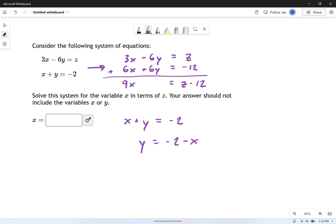And now I'm going to stick that back into the first equation. The first equation was 3x minus 6y, but instead of y, I'm going to write negative 2 minus x. And then the result was z. So see I stuck that right here.